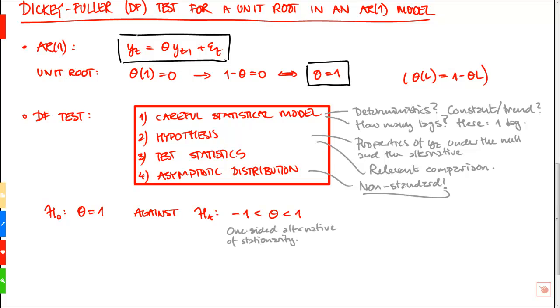However, note that the original AR1 model we had up here, we can rewrite that. Simply subtract yt from both sides, and we get that the change in yt equals theta minus 1 times yt minus 1 plus epsilon t. And now, define theta minus 1 as pi, and we get that the change in yt equals pi times yt minus 1 plus epsilon t.